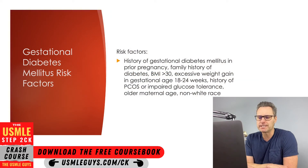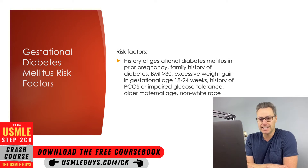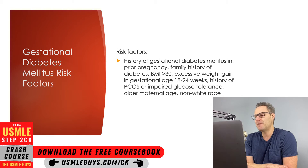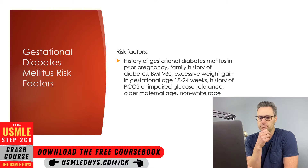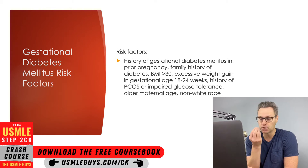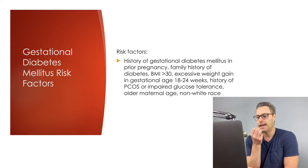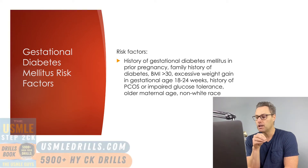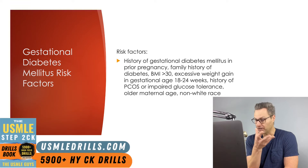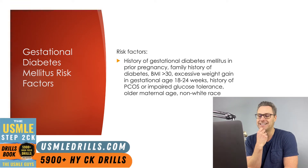Let's start by discussing some of the risk factors for gestational diabetes. If the patient has a history of gestational diabetes in prior pregnancies, this places them at an elevated risk for subsequent pregnancies. If the patient has a family history of diabetes, especially in a first-degree relative, that would be a risk factor. If the patient had a BMI over 30 prior to pregnancy, or excessive weight gain during the gestational time frame of 18 to 24 weeks, that would also put them at increased risk.